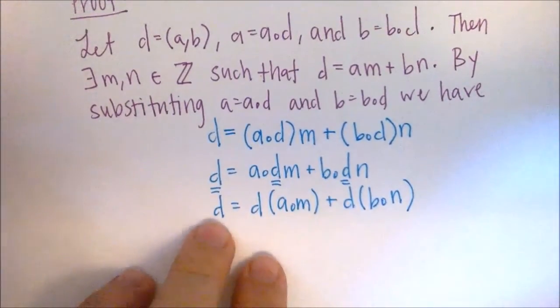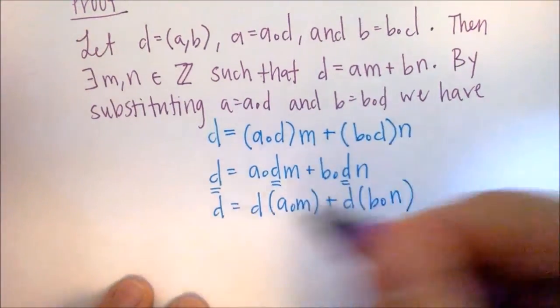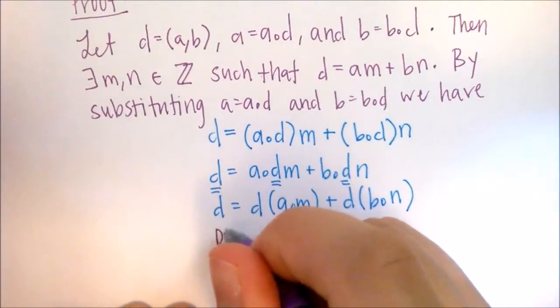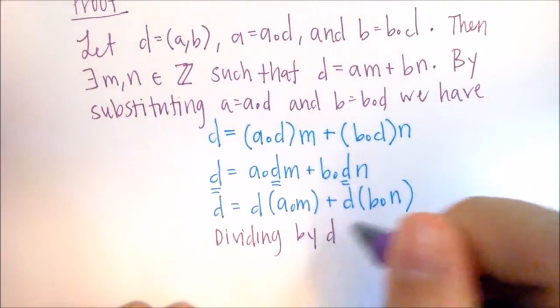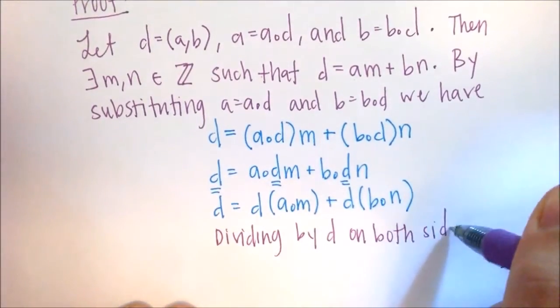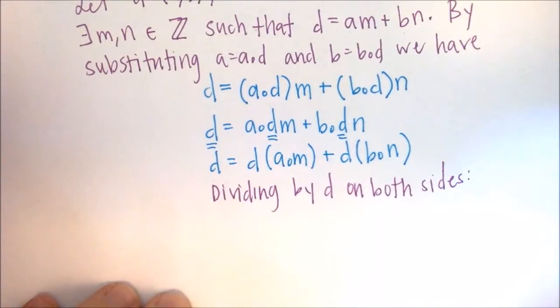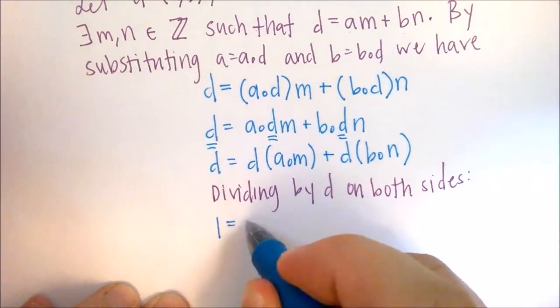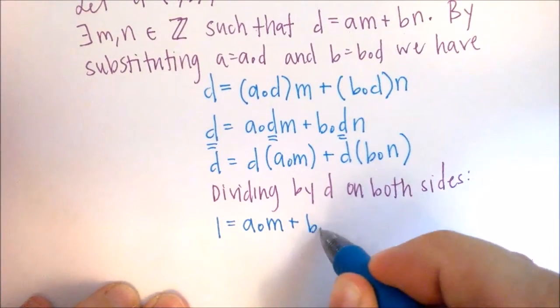And since there's a D in every factor, we can divide it through. So just dividing by D on both sides, we get 1 is equal to A0M plus B0N.